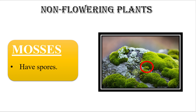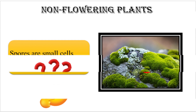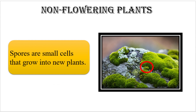Mosses produce spores to reproduce. These spores are present at the end of the stalk — you can see in the picture, I have marked it in red. A spore is a small cell that has the capability to grow into a new plant. Just as seeds help flowering plants reproduce, spores serve the same purpose for mosses.